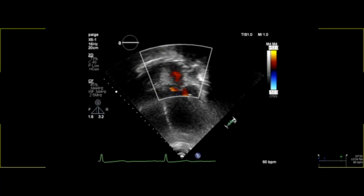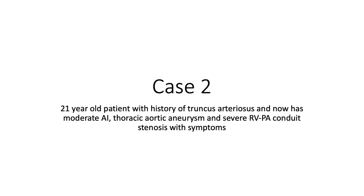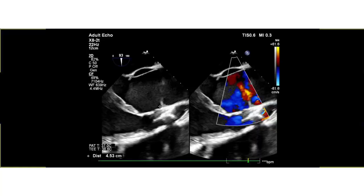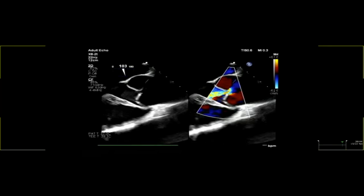The second patient is a 21-year-old with a history of truncus arteriosus who now has moderate AI, thoracic aortic aneurysm, and severe RV-to-PA conduit stenosis with symptoms. His BSA was 1.5 m². Preoperative echocardiogram shows a dilated aortic aneurysm of about 45 mm with moderate aortic insufficiency mostly through the central area of non-coaptation, seen in both the long axis and short axis views.